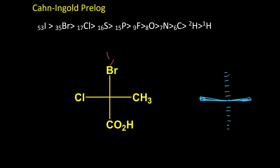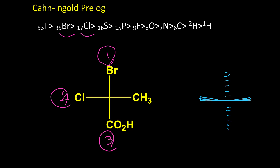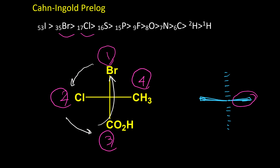Here is the next example. Bromine is number one, chlorine is number two, and we have carbon here. This carbon has oxygen and the other carbon doesn't, so this is number three and methyl is number four. Number four is in the front. So whatever we find, we need to reverse it. From one to two to three, our rotation is counterclockwise. But instead of saying S, we say configuration is R, because number four is in the front of the molecule, not in the back.